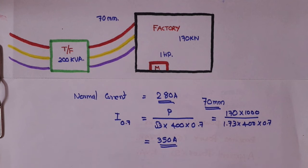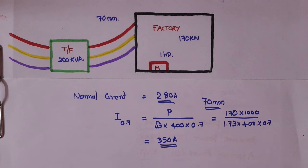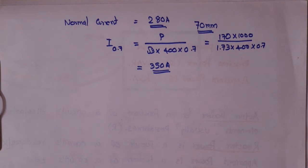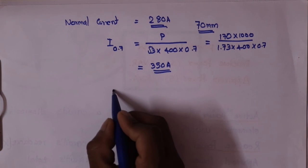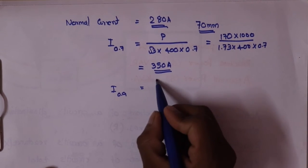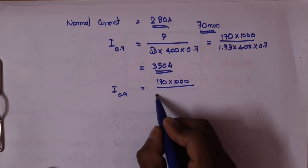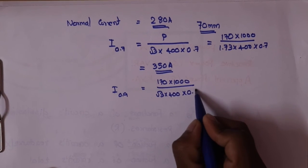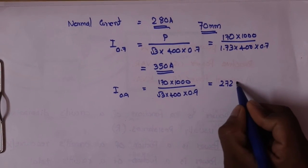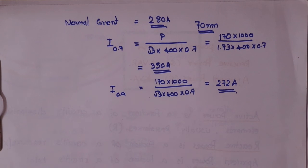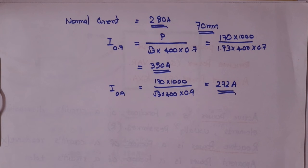I have installed the cable properly, but it will be overloaded over time. This cable will be removed from service due to overcurrent. It will be removed due to short-circuit. Now, with power factor 0.9, the current equals 170 into 1000 divided by root 3 into 400 into 0.9, which is equal to 272 amps. The power factor is better at 272 amps versus 350 amps.